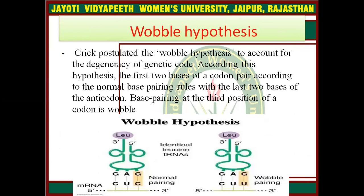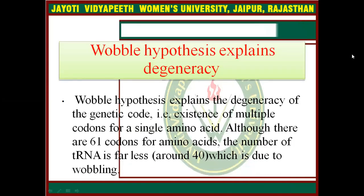Now, the Wobble hypothesis. Crick postulated the Wobble hypothesis to account for the degeneracy of the genetic code. According to this hypothesis, the first two bases of a codon pair normally with the last two bases of the anticodon. Base pairing at the third position of a codon is wobble — meaning it can change. The Wobble hypothesis explains degeneracy: the existence of multiple codons for a single amino acid. Although there are 61 codons for amino acids, the number of tRNA molecules is far less, which is due to wobbling.